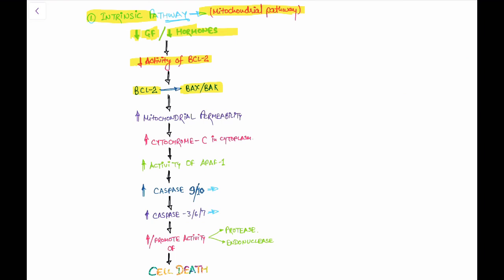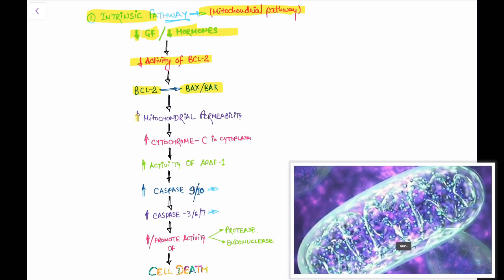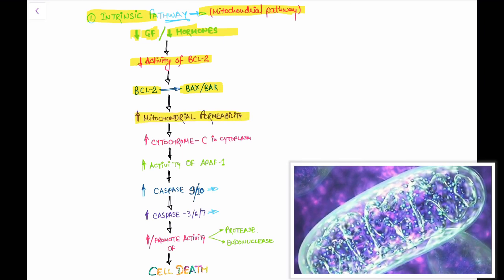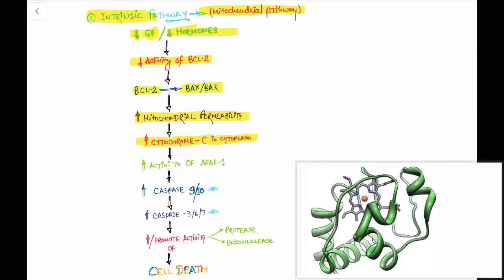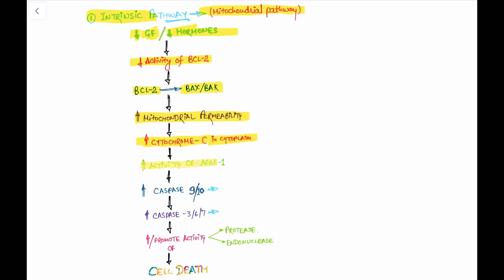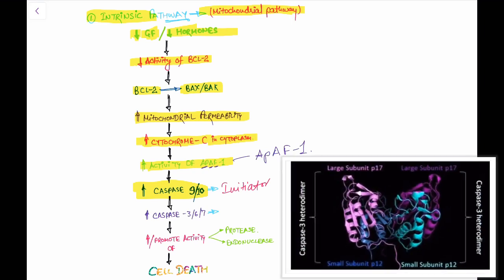BAX causes an increase in mitochondrial permeability, which leads to cytochrome C leaking out of the mitochondria into the cytoplasm. The increase in cytochrome C in the cytoplasm is responsible for increasing the activity of Apoptotic Activating Factor 1, which leads to increased activity of caspase 9 and 10, which are initiator caspases.